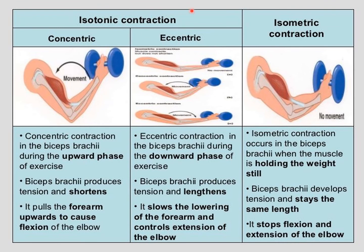In the figure, isotonic contraction has two types — concentric and eccentric — and there is also isometric contraction. Isometric contraction occurs in the biceps brachii when the muscle is holding the weight still: the biceps brachii develops tension and stays the same length, stopping flexion and extension of the elbow. There is no movement; you hold the dumbbells stationary in front of you, so there is no change in the length of the muscle, but tension develops inside it.